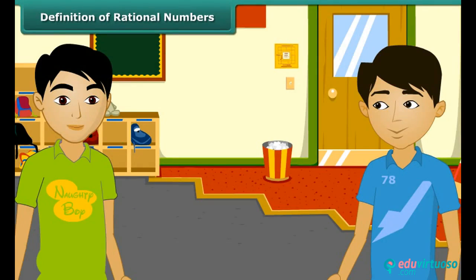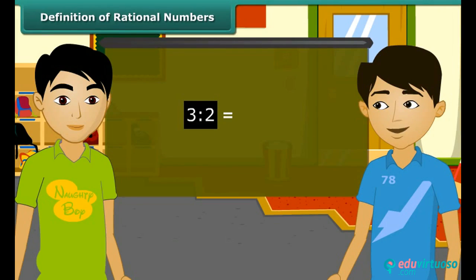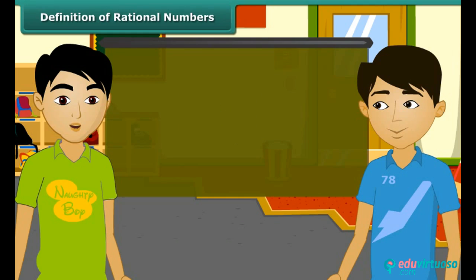The word rational arises from the term ratio. You mean that a ratio like 3 is to 2, which can also be written as 3 by 2, is a rational number? Yes. Similarly, the ratio of two integers P and Q, in which Q is not equal to 0, can be written in the form P by Q.